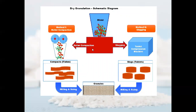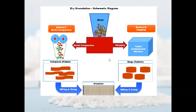In dry granulation, two methods are used. In slugging, a tablet compression machine is used; the properly blended powder mixture is compressed into slugs or larger tablets, which are then milled and sized to get the desired granule size. In roller compaction, the blended powder mixture is passed through rollers which apply high pressure to form compacts or flakes, which are then milled and sized to get the desired granules.